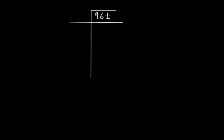Now, starting from the one's place, that is from the rightmost digit, start making pairs. So 1 and 6 is the first pair — put a bar over this. Now we have only one digit left so we cannot make another pair, but still you'll place a bar over 9. Since we have two bars here, it means that the total number of digits in your square root will be 2.